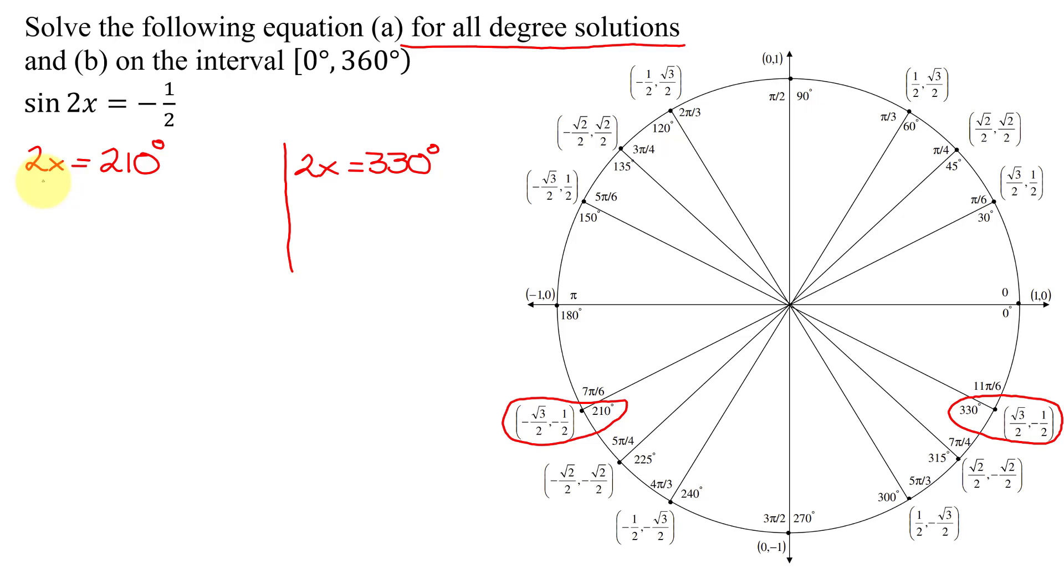So to get all coterminal angles for 210, I'm just going to add 360 degrees times n, where n is an element of the integers. And I'm going to do the same here, is I'm going to add 360 degrees times n.